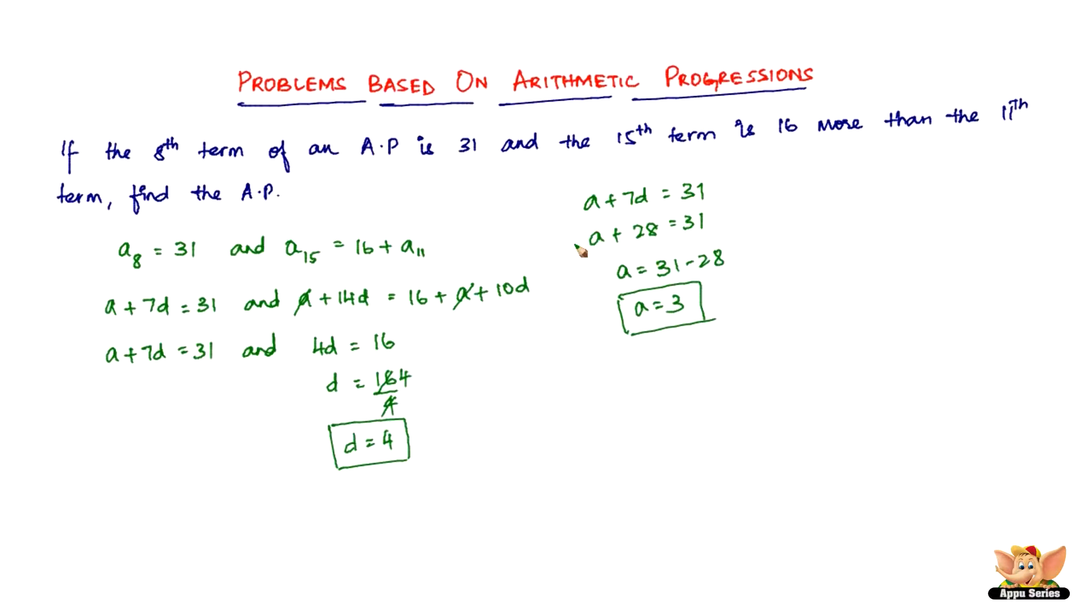We found a and d, so we can write the AP. The first term is 3 and the difference is 4. So 3, 7, 11, 15, 19, 23 and so on. This is the AP we found from the given data.